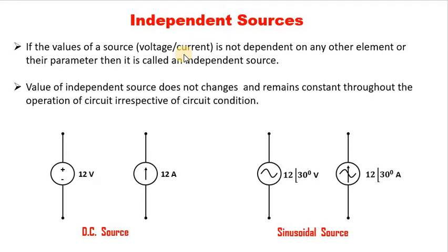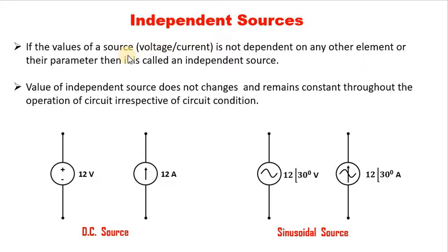What is an independent source? By definition, if the value of a source — which can be a voltage source or a current source — is not dependent on any other element or their parameter. By element I mean any other resistance, inductor, capacitor, or any other voltage or current source. Parameter means the current flowing through a certain element or the voltage across a certain element. If these things do not affect the value of my source, then it is called an independent source, and its value remains constant throughout the operation of the circuit.